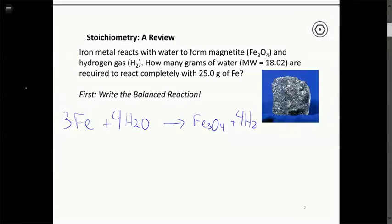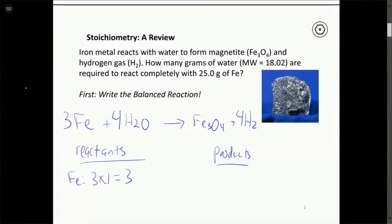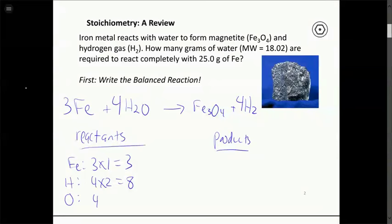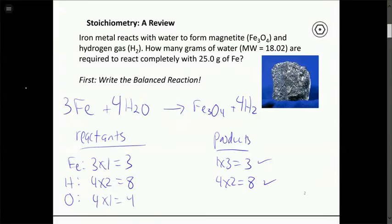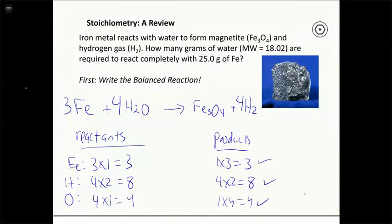Let's verify the balanced equation by checking atoms on each side. On the reactant side: iron — 3×1 = 3; hydrogen — 4×2 = 8; oxygen — 4×1 = 4. On the product side: iron — 1×3 = 3; hydrogen — 4×2 = 8; oxygen — 1×4 = 4. All atoms check out. It's always helpful to verify atoms on each side, especially for more complicated reactions.